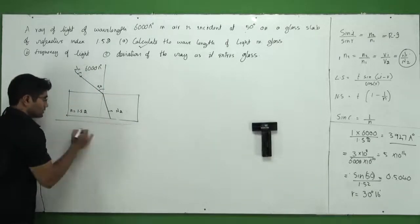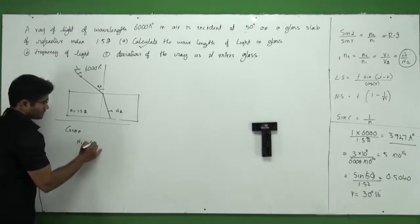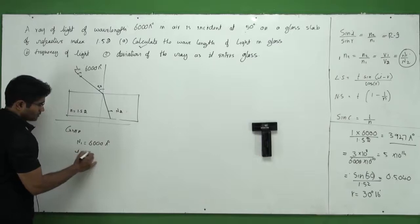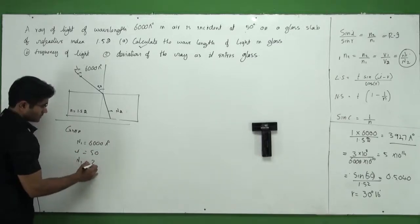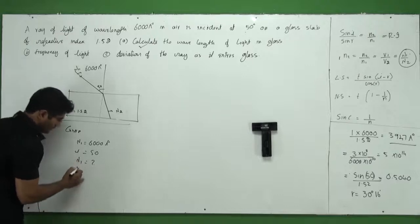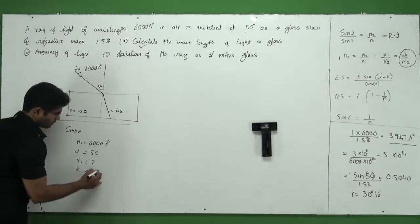Come back to this here. What is given to me? Given to me is simply lambda 1 is 6000 Angstrom and then I have i is supposed to be 50 and lambda 2 is to be found out and N of glass is 1.52.